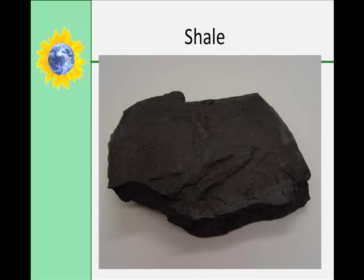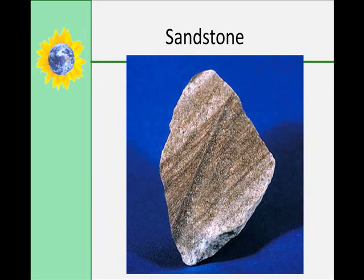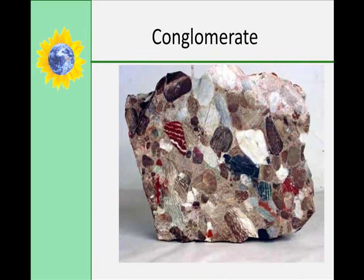Shale is composed of clay particles that are so small that individual particles cannot be seen without magnification. Sandstone grains are easily visible on close inspection and feel gritty to your fingers. Conglomerate is made of pebbles, cobbles, or boulders held together by a natural cement — usually, again, calcite.